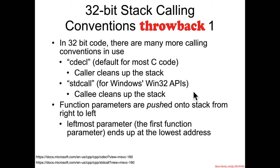Way back when we were learning about the call and return assembly instructions, I said that the RET instruction has another form where it can pop something off of the stack into RIP, but it can also add to the stack. That is the place — Win32 APIs using the Standard Call convention — where you are most likely to find that particular form of the RET instruction.